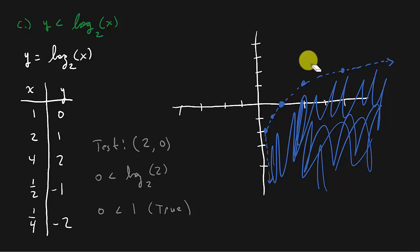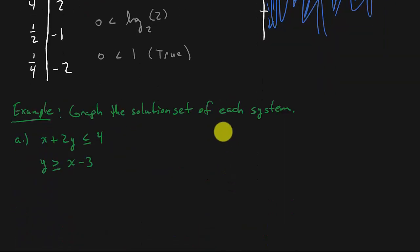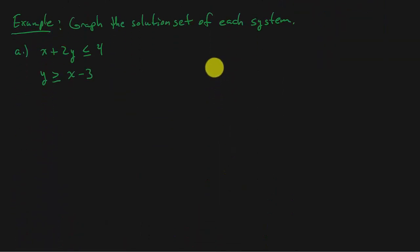This really isn't that bad. Now let's get to the good stuff: systems of linear inequalities. All you do is graph each inequality separately on the same x-y coordinate system. And then you've got to do something at the end.